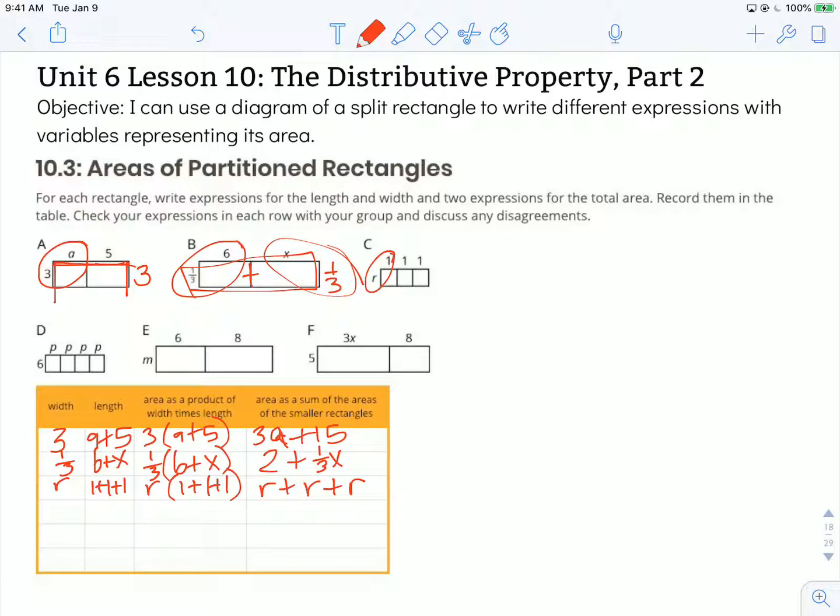Let's look at D together and then I'll leave the other two for you to do. For shape D, we have a width of 6 and a length of p plus p plus p plus p. So we could write that as 6 times (p plus p plus p plus p). But we can also acknowledge that's the same thing as 4 p's. So we could just add those together and make that 6 times 4p.